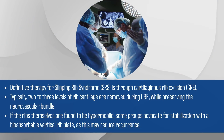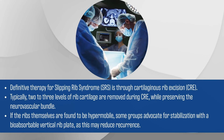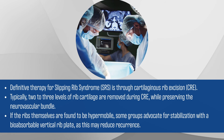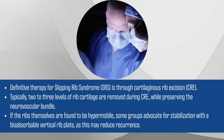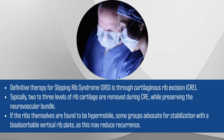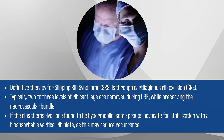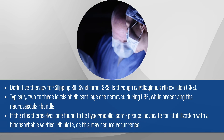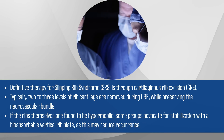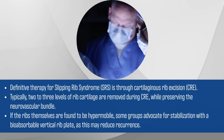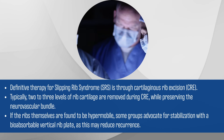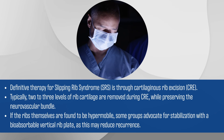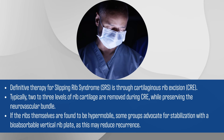The definitive treatment for Slipping Rib Syndrome is cartilaginous rib excision, where typically two to three levels of rib cartilage are removed while preserving the neurovascular bundle. In cases of hypermobile ribs, some advocate for stabilization with a bioabsorbable vertical rib plate to potentially reduce recurrence.